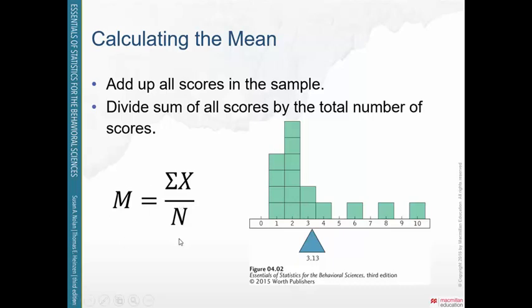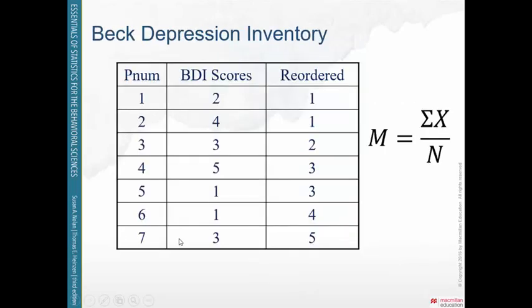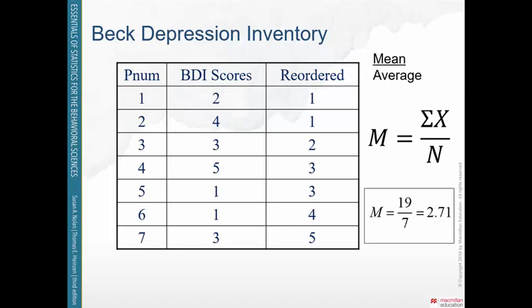To find the mean Beck Depression Inventory score using our same seven scores, you add up all the scores — it doesn't matter whether you use the random or reordered order. The sum of scores is 19, divided by 7, which gives you a mean of 2.71.